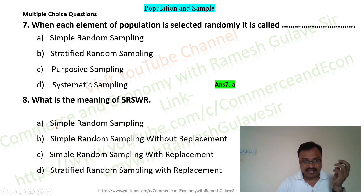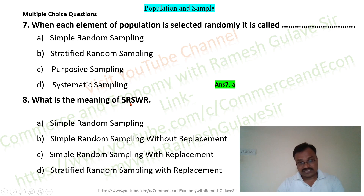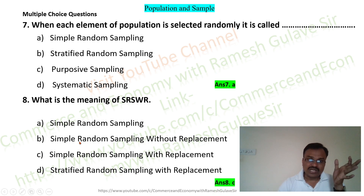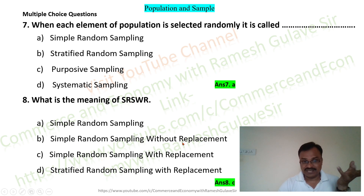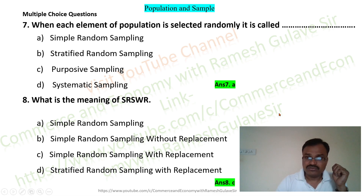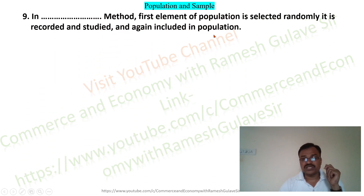The options for SRSWR are: simple random sampling, simple random sampling without replacement, simple random sampling with replacement, and stratified random sampling with replacement. SRSWR stands for simple random sampling with replacement, so option C is the right answer. When the word 'WO' is included — SRSWOR — it means simple random sampling without replacement.